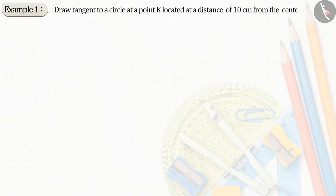Draw tangent lines to the circle at a point K located at a distance of 10 cm from the center of the circle of radius 5 cm.